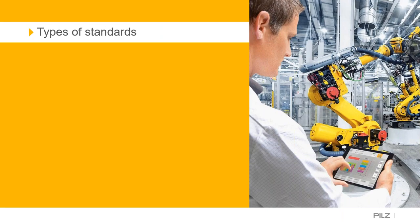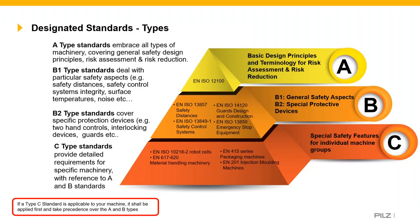Looking at different types of standards: the A standard specifies fundamental concepts, terminology, and principles — EN ISO 12100, safety of machinery, general principles for design, risk assessment and risk reduction. B standards deal with certain machinery safety issues or types of safeguards applicable across a wide range of machines — for example, EN 14119 for interlocks. C-type standards contain specifications for a certain individual machine type or machine group, which is what we're covering today. A C standard takes precedence over any other standards.